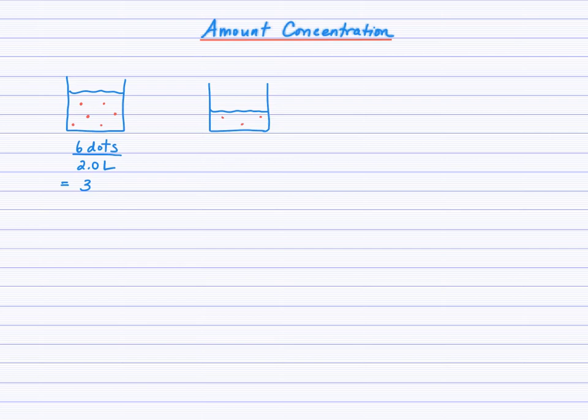If that's two liters of solution and six dots of solute, then I can generate a rate here of three dots per liter, six divided by two, three dots per liter. Now have a look at the second beaker. Let's say these contained glasses of iced tea and the red dots are solute crystals of the iced tea. How do you think the first beaker on the left would taste compared to the solution on the right side?